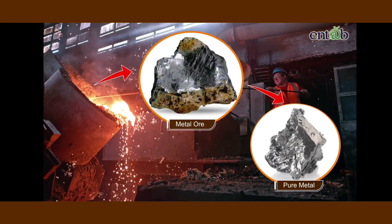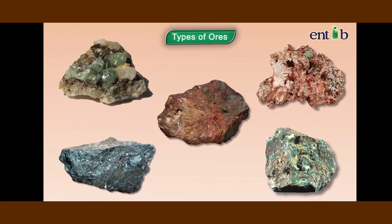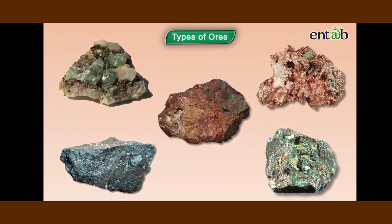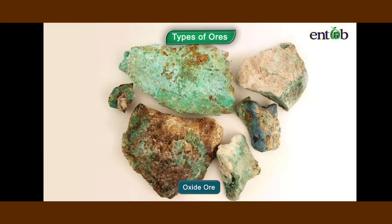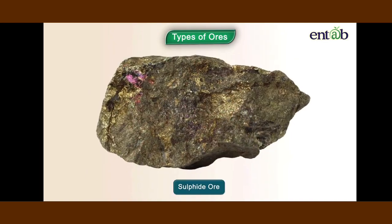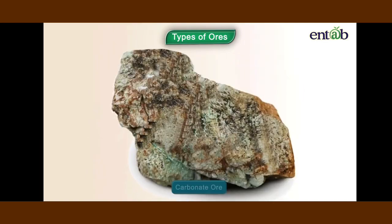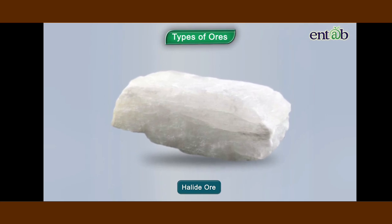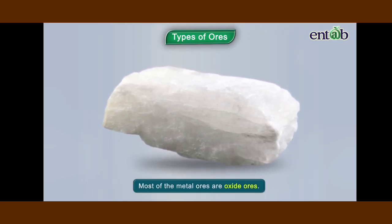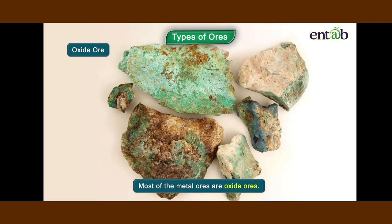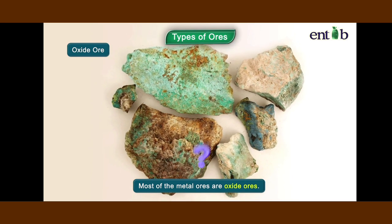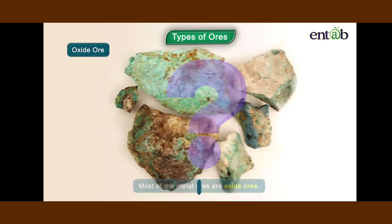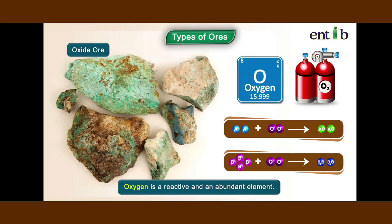Generally, the various types of ore from which metals are extracted are oxide ores, sulphide ores, carbonate ores, and halide ores. It is interesting to note that most of the metal ores are oxides. Can you think why? Because oxygen is a very reactive element and is very abundant on the earth.